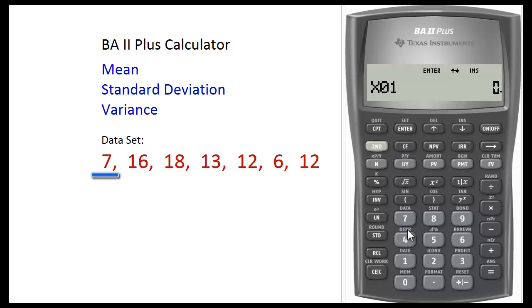Then press 7, enter, press the down arrow button. Since we don't need the Y values, just skip them. Press the down arrow button again, enter the next value, 16, enter.